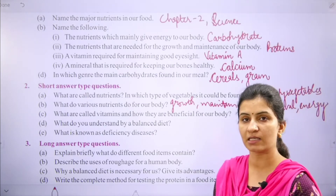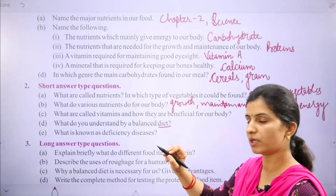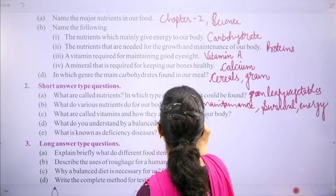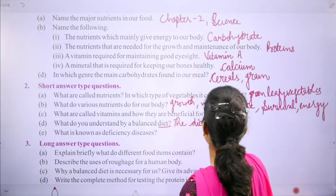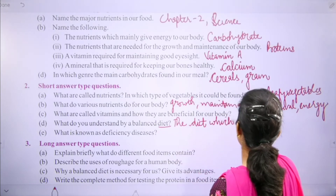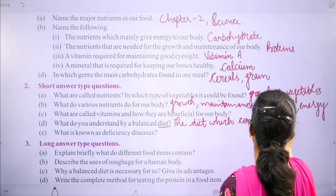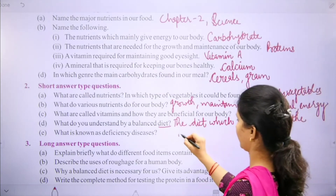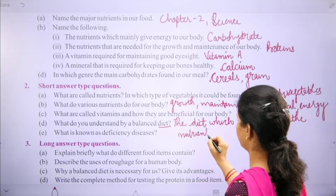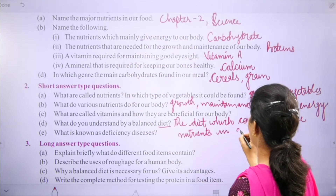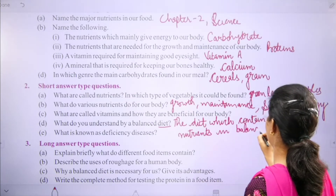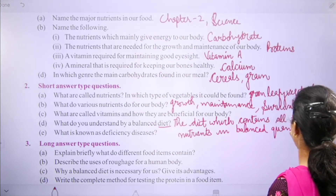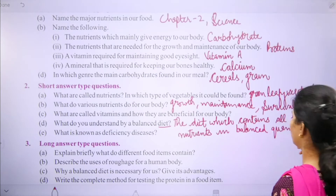Vitamin D is for our bones. Now, what do you understand by a balanced diet? A balanced diet is a diet which contains all the nutrients in a balanced quantity.